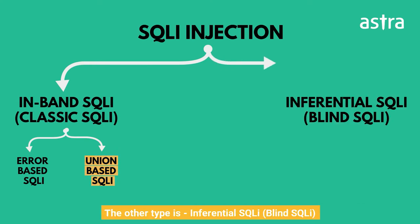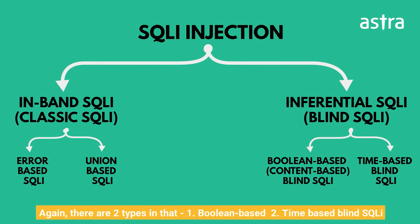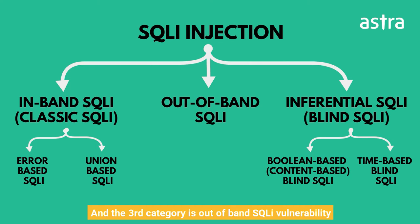The second type is inferential SQL injection vulnerability, which is also called blind SQL injection. There are again two types: Boolean-based or content-based blind SQL injection, and time-based blind SQL injection. The third category is out-of-band SQL injection vulnerability.